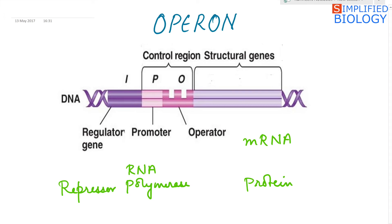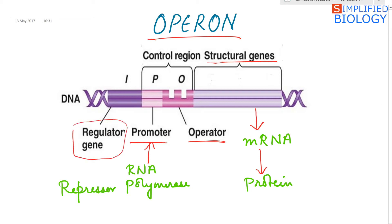The operon consists of different sets of genes. First are the structural genes. The structural genes transcribe to form messenger RNA that translates to form proteins. Lying next to the structural genes are the operator gene and the promoter gene. To the promoter gene, RNA polymerase binds. Also present is a regulator gene which synthesizes a protein called the repressor that has the capability to bind to the operator.